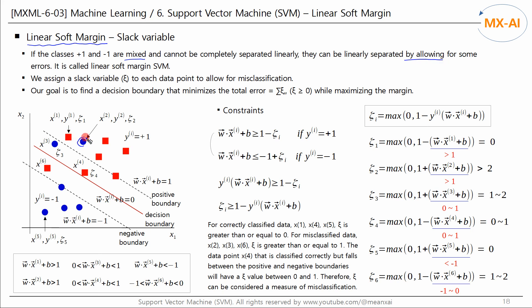In the figure below, this data point and this data point are mixed with the red data points. In this case, a straight line cannot perfectly separate the two data clusters. However, allowing for some misclassification, this line can roughly separate the two clusters. This is called the linear soft margin SVM. To allow for misclassification, we assign a slack variable zeta to each data point. Our goal is to find a decision boundary that maximizes the margin while minimizing the misclassifications.